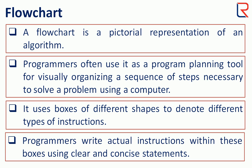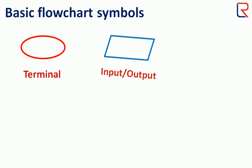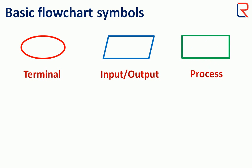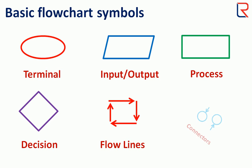Programmers write actual instructions within these boxes using clear and concise statements. Let's see the basic flowchart symbols: terminal symbol, input-output box, process box, decision box, flow lines, and connectors.